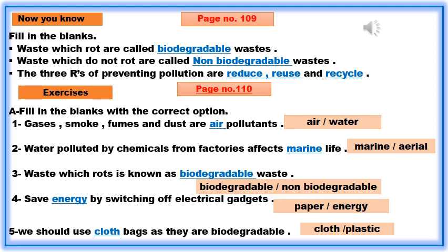Number two: water polluted by chemicals from factories affects marine life. Number three: waste which rots is known as biodegradable waste. Number four: save energy by switching off electrical gadgets. We should use cloth bags as they are biodegradable.